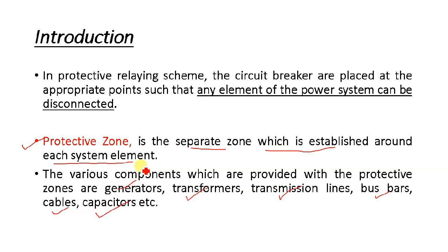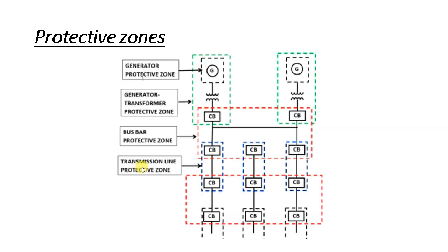If there is a fault in one zone, it will not affect the other zones because the healthy portion remains intact and the faulty portion is already isolated. In this way, no part of our power system should be left unprotected — all parts of the power system should be protected.